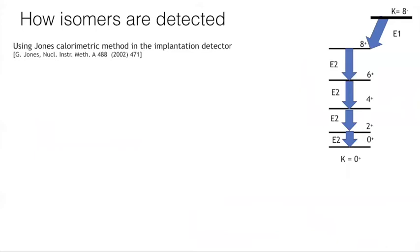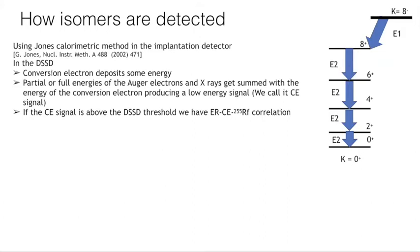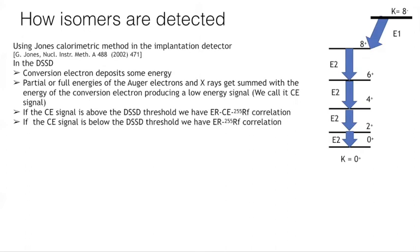Before showing our results, I want to describe how we detect the isomers. Imagine we have an 8− isomer decaying to 0+: the E2 transitions will convert internally, leaving a hole in the atomic orbitals and triggering a cascade of atomic processes. The isomer will be detected through Johnson's calorimetric method in the DSSD. The conversion electrons deposit some energy depending on the direction they travel, and there is partial and full energy summation with other electron energies and X-rays. We call this signal the C signal. If the C signal is above the DSSD threshold, we have a chain of evaporation residue–C signal–Rf-255 ground state decay correlations.